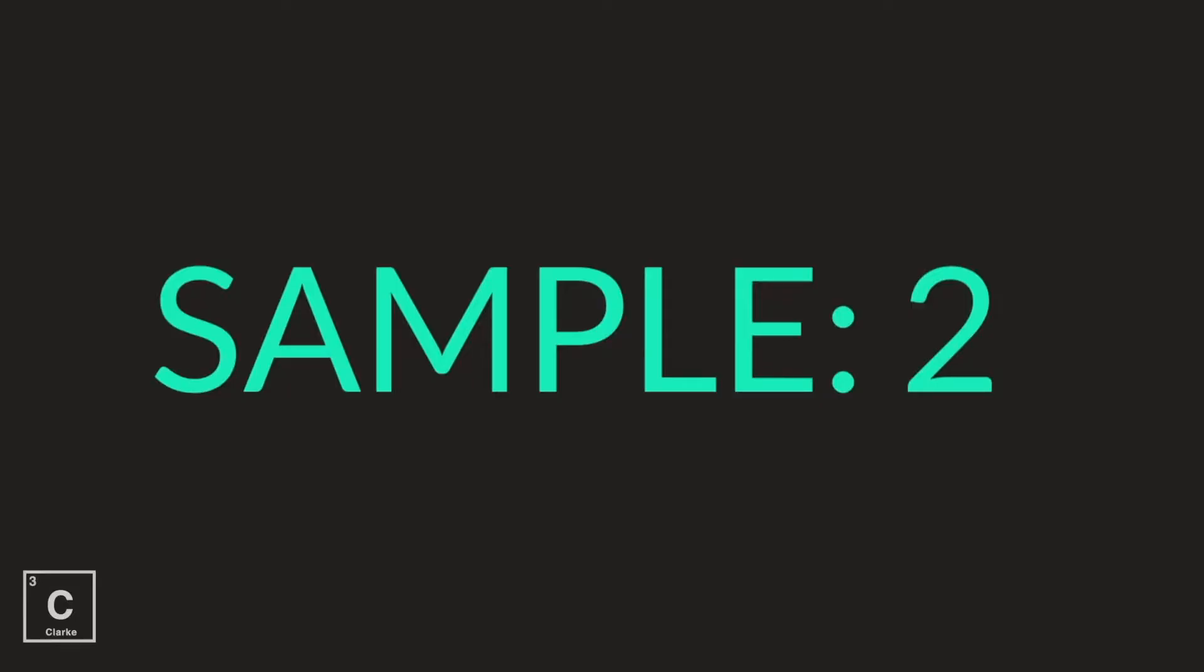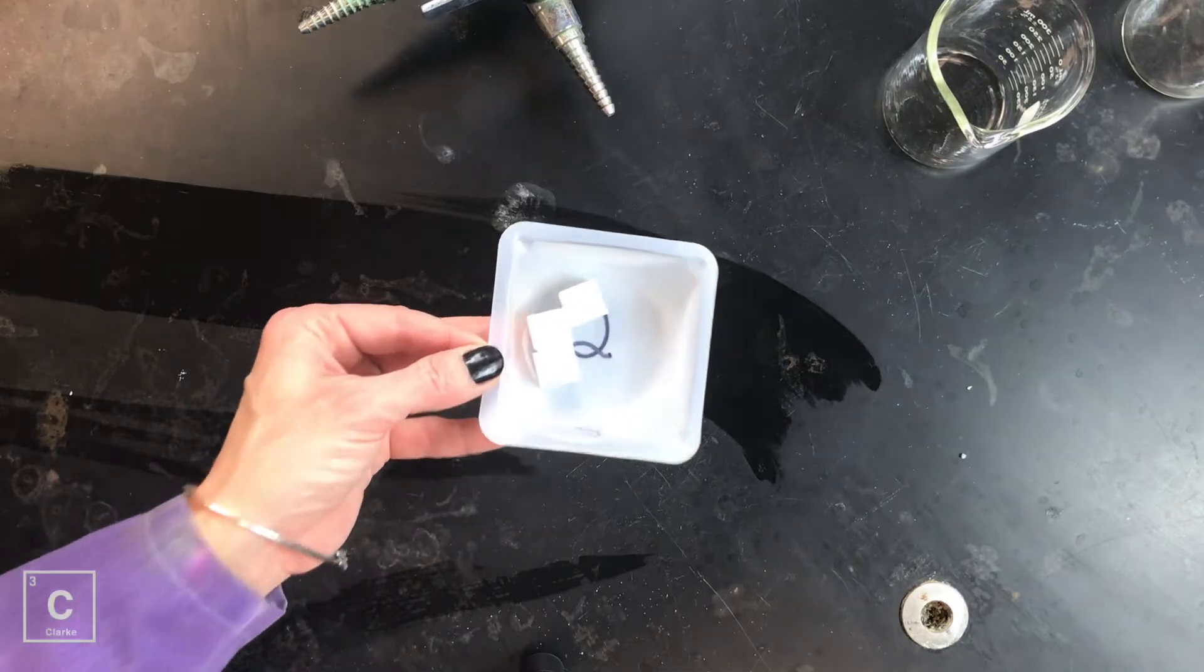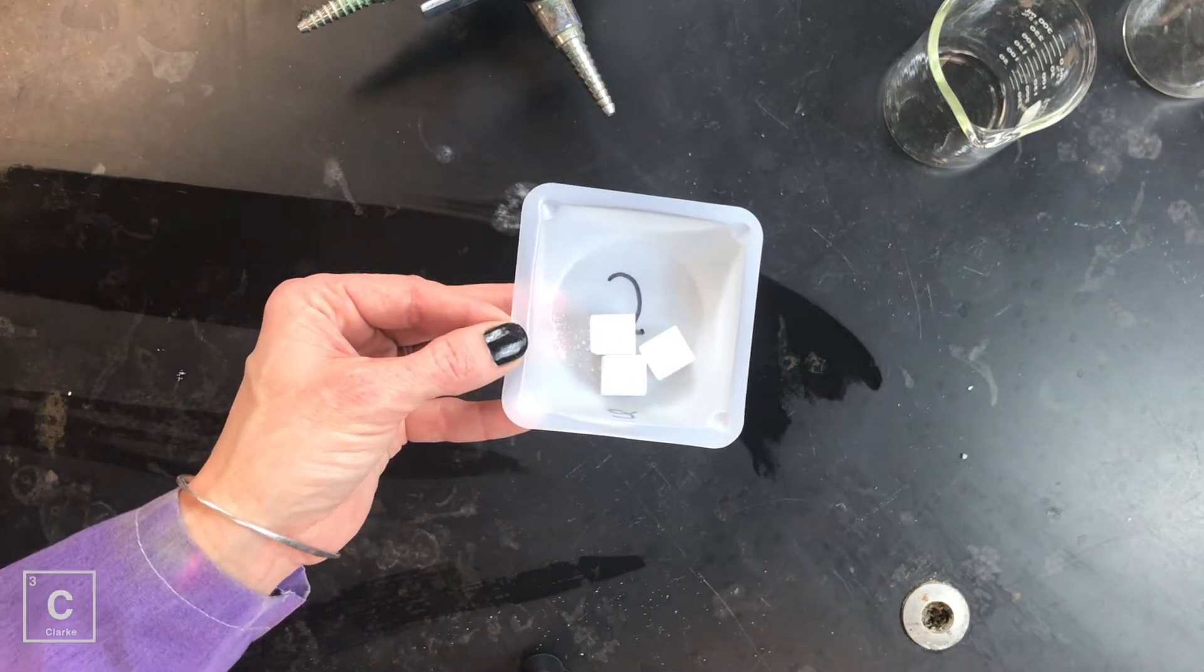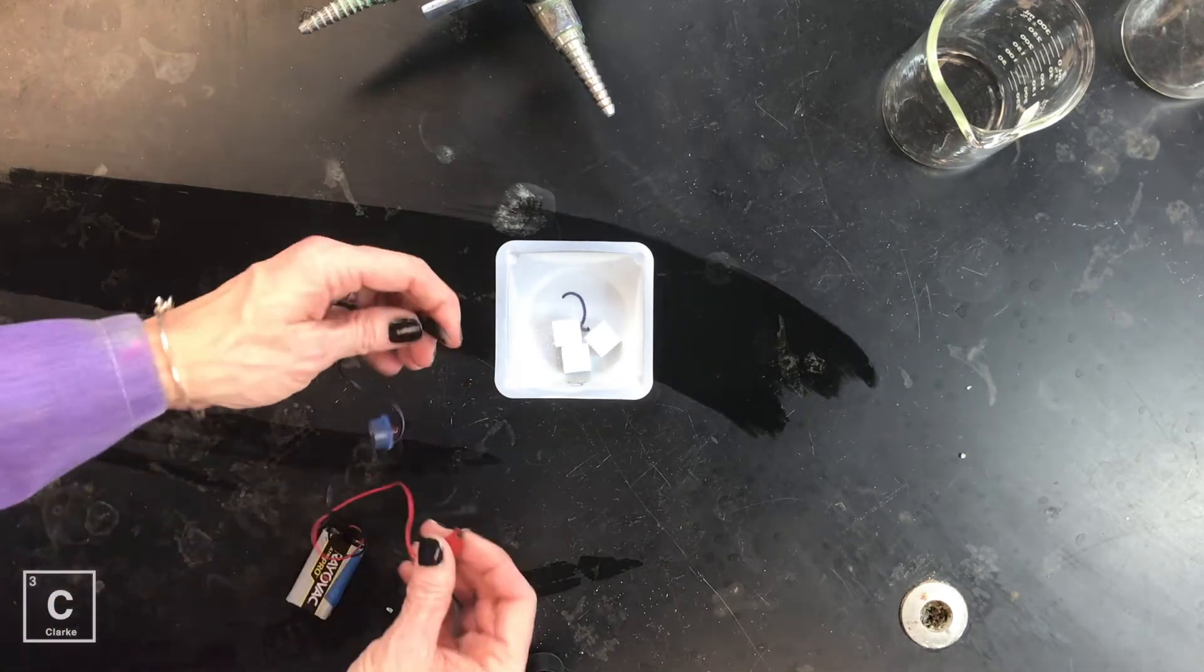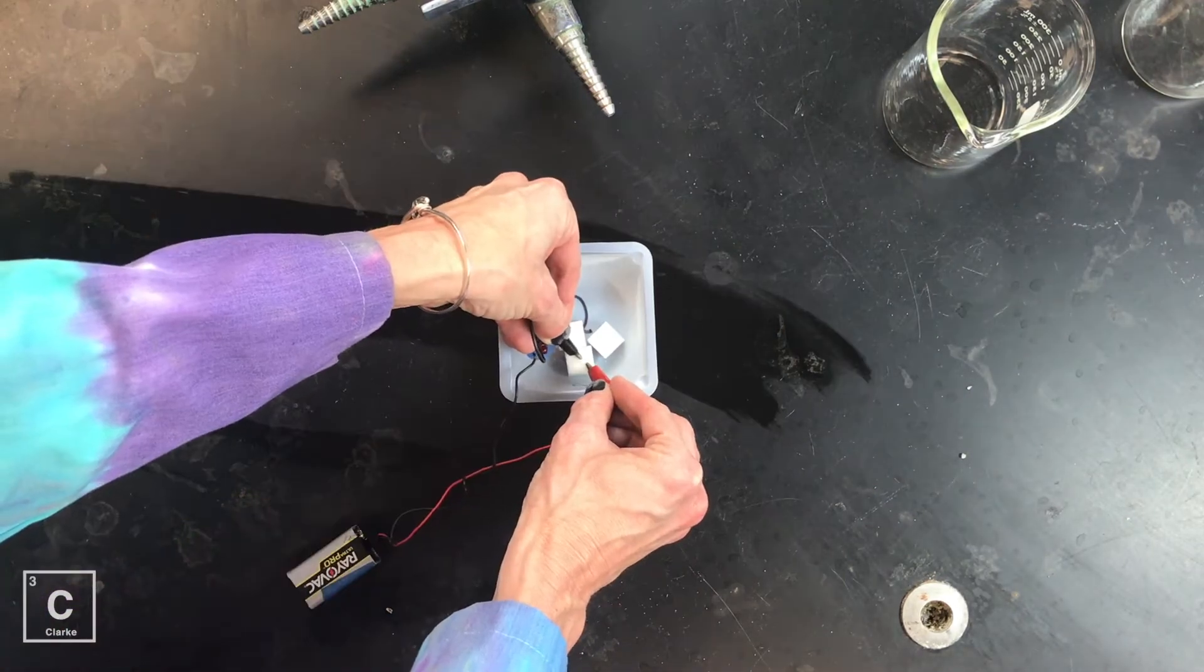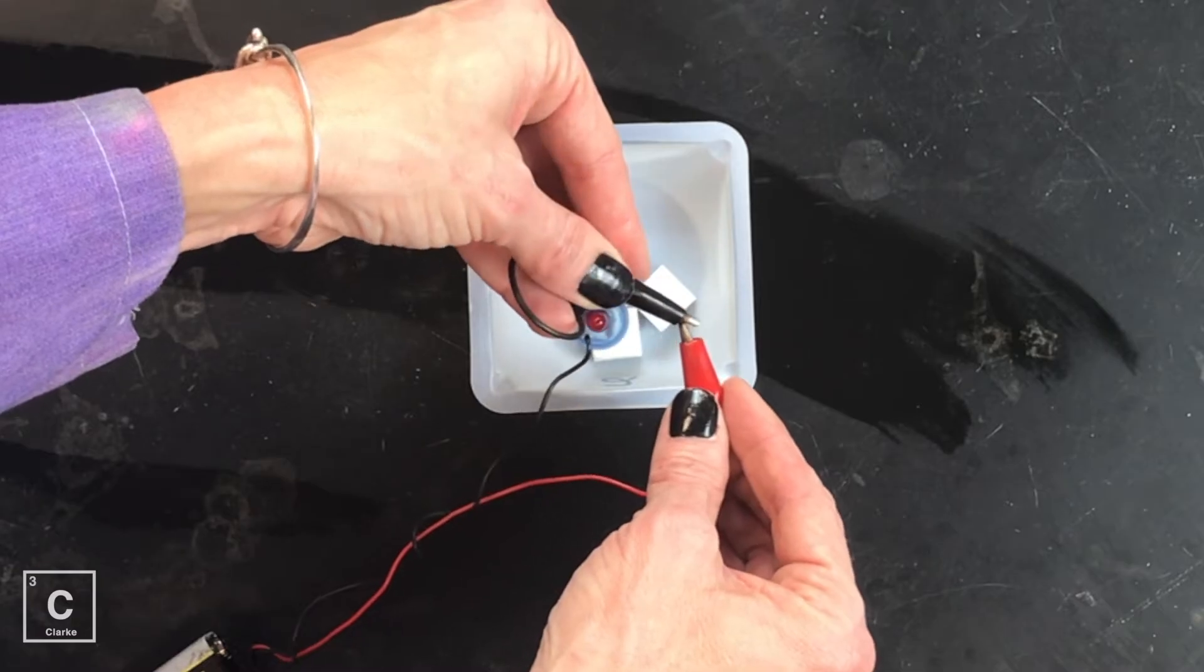Okay, next we've got substance two. Let's make sure and observe its appearance. I'm going to test its conductivity as a solid. Okay, there's our result. Remember, this is what a positive result looks like.